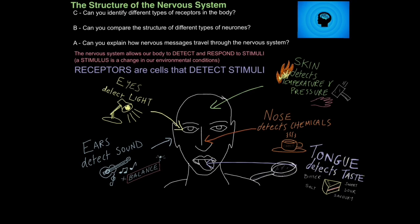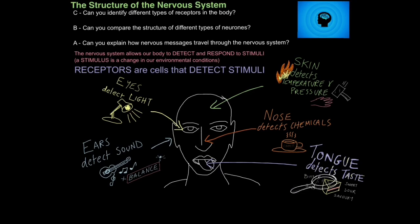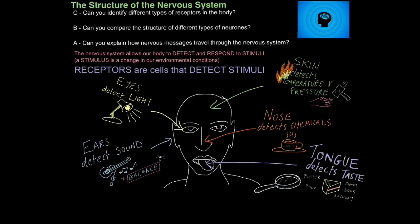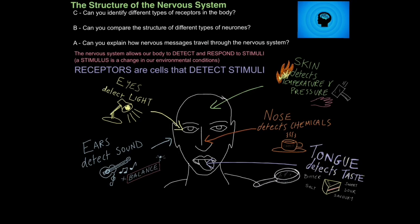You'll be aware that we can detect the sensation of bitterness, saltiness, sweetness, and sourness. And very recently, we discovered another — a fifth type of receptor called umami receptors — and they can detect a kind of savoury, mushroomy, cheesy, meaty type of flavour.